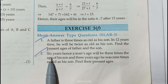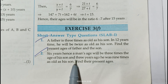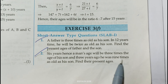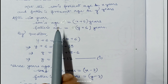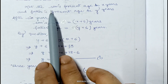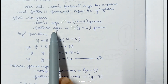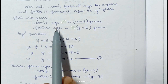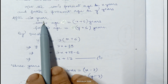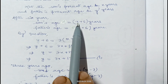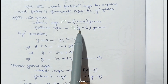In question number 2 it is given: 6 years hence, a man's age will be 3 times the age of his son, and 3 years ago he was 9 times as old as his son. Find their present ages. Let the son's present age be x years and father's present age be y years. After 6 years, son's age will be x plus 6 and father's age will be y plus 6.